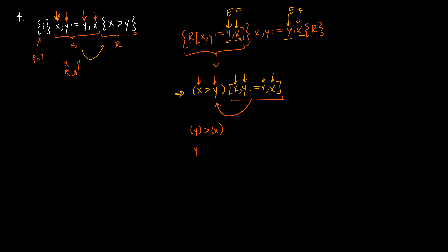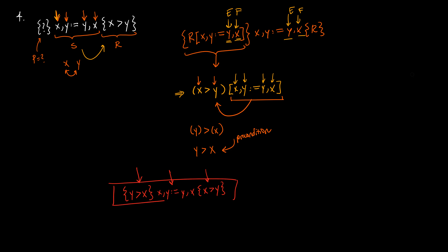Removing unnecessary parentheses, y > x is a valid precondition for this Hoare triple. The complete triple is: {y > x} x, y := y, x {x > y}. This makes intuitive sense: if we begin in a state where y > x and then swap x and y, we will terminate in a state where x > y.